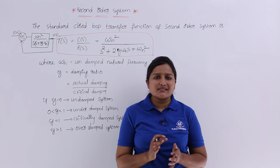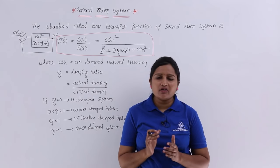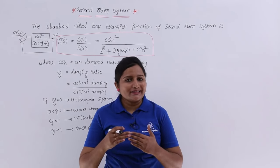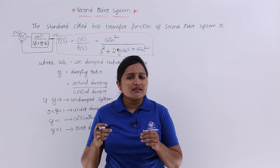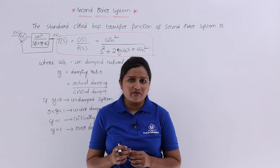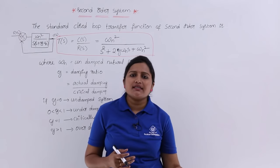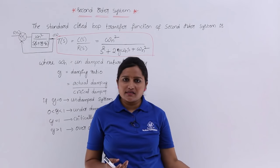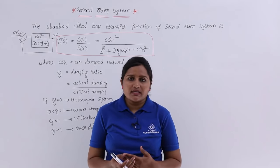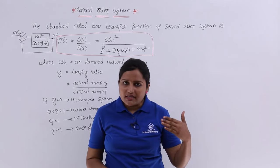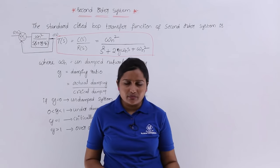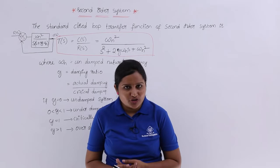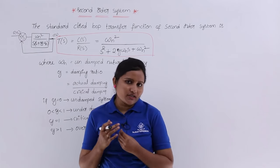In this video, we are going to discuss about second order systems. A second order system is one where, in the transfer function's denominator polynomial, the maximum power of s must be 2. If the maximum s power is equal to 1, then that is a first order system. So if you observe the maximum power of s is equal to 2, then we can say that is a second order system.